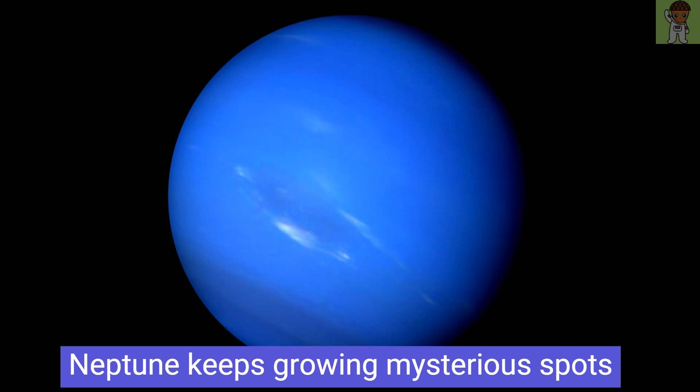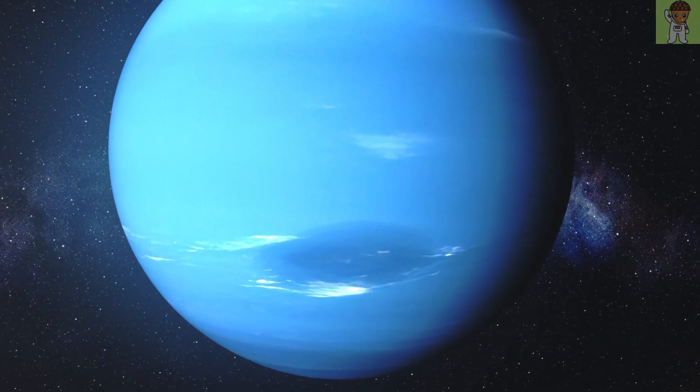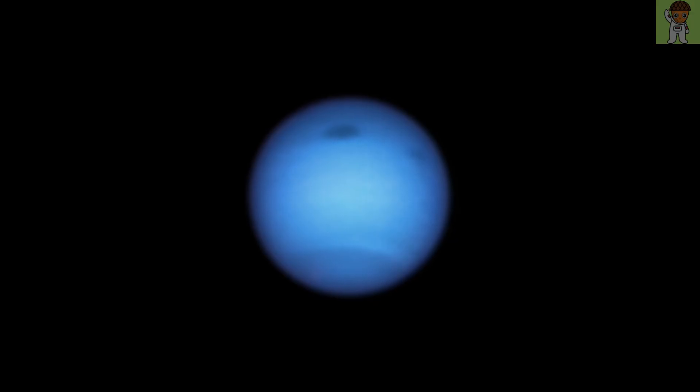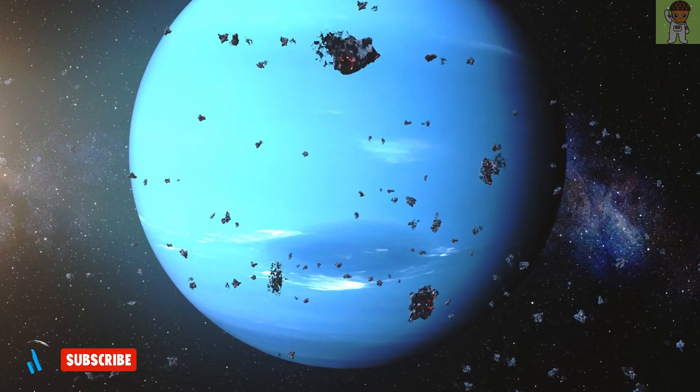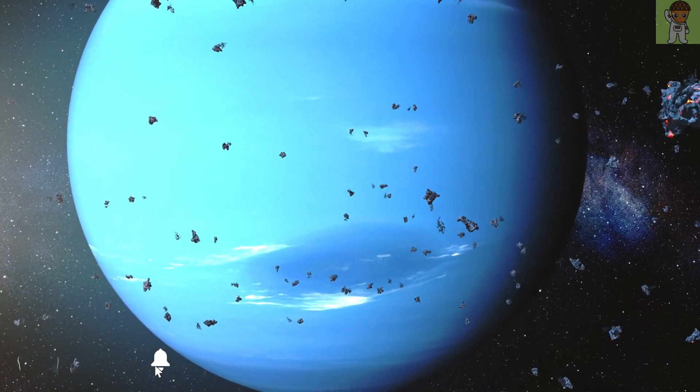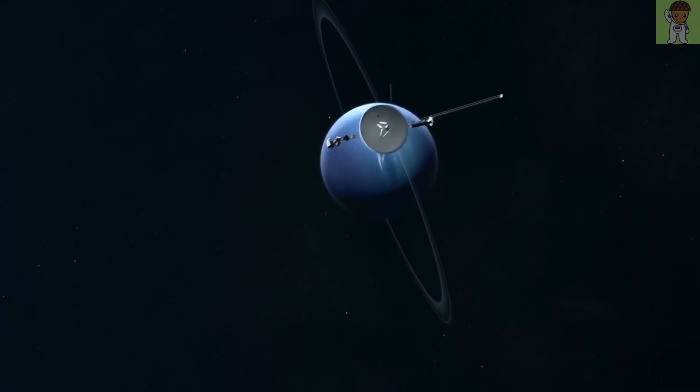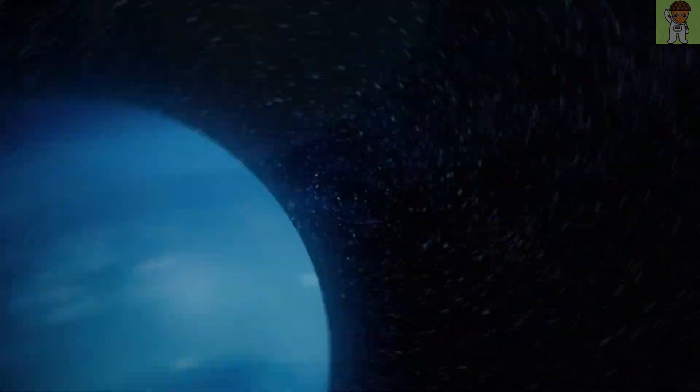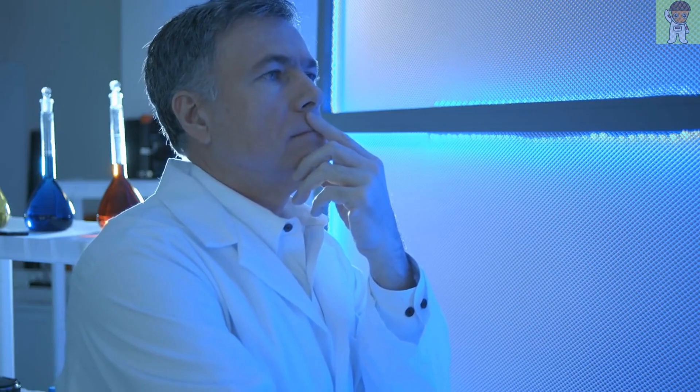Neptune keeps growing mysterious spots. This year, astronomers captured the first clear image of one of Neptune's mysterious dark spots from Earth and photographed a never-before-seen bright spot at the same time. Temporary dark spots have been documented on the solar system's most distant planet since 1989, when Voyager 2 spotted one as it passed by. Scientists think the dark spots are probably gigantic storms, like Jupiter's great red spot, but they are unsure why the spots appear so dark.